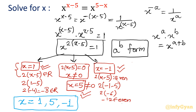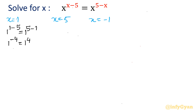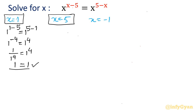Now let us cross-examine all three values. For x = 1: 1^(1−5) = 1^(5−1) becomes 1^(−4) = 1^4, which gives 1/1 = 1 — true. For x = 5: 5^(5−5) = 5^(5−5) becomes 5^0 = 5^0, so 1 = 1 — true and correct.